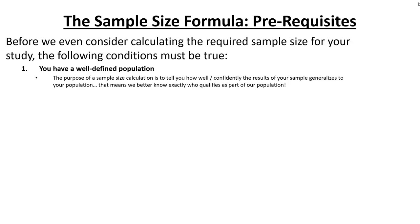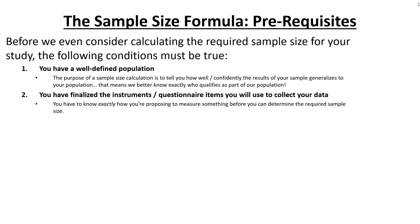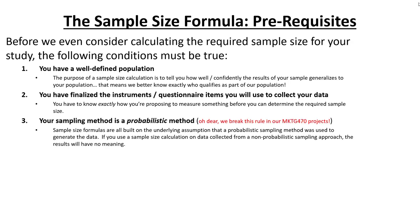First, we need to have a well-defined population — that should hopefully already be done. If the whole point is that we want to generalize our sample to the population, we need to have a clear definition of that for our study. In addition, to determine the optimal sample size, we already have to have our finalized instruments or questionnaire items that we're going to be using to collect our data.